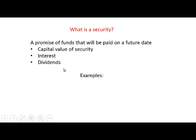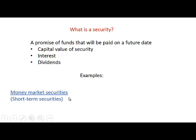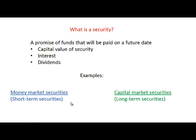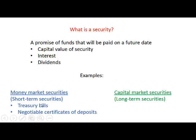There are two types of securities: money market securities, which are short-term securities, and capital market securities, which are long-term securities. Examples of money market securities are treasury bills, which are short-term securities issued by the government, and negotiable certificates of deposit, which are short-term securities issued by banks.